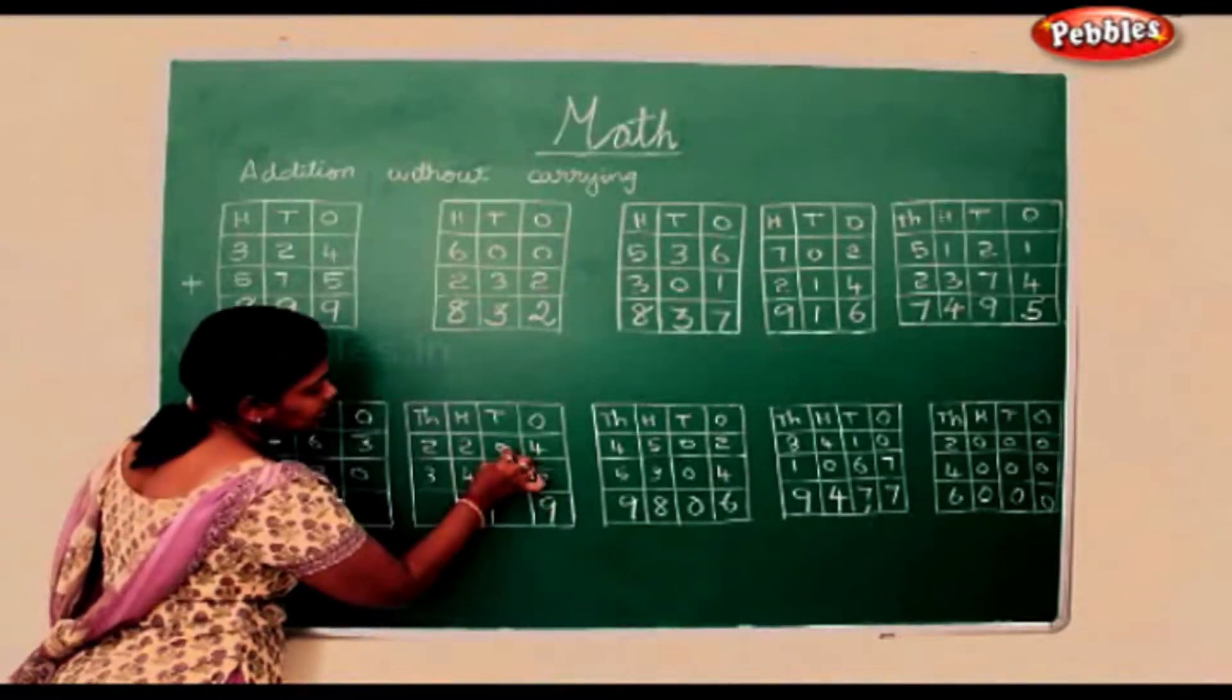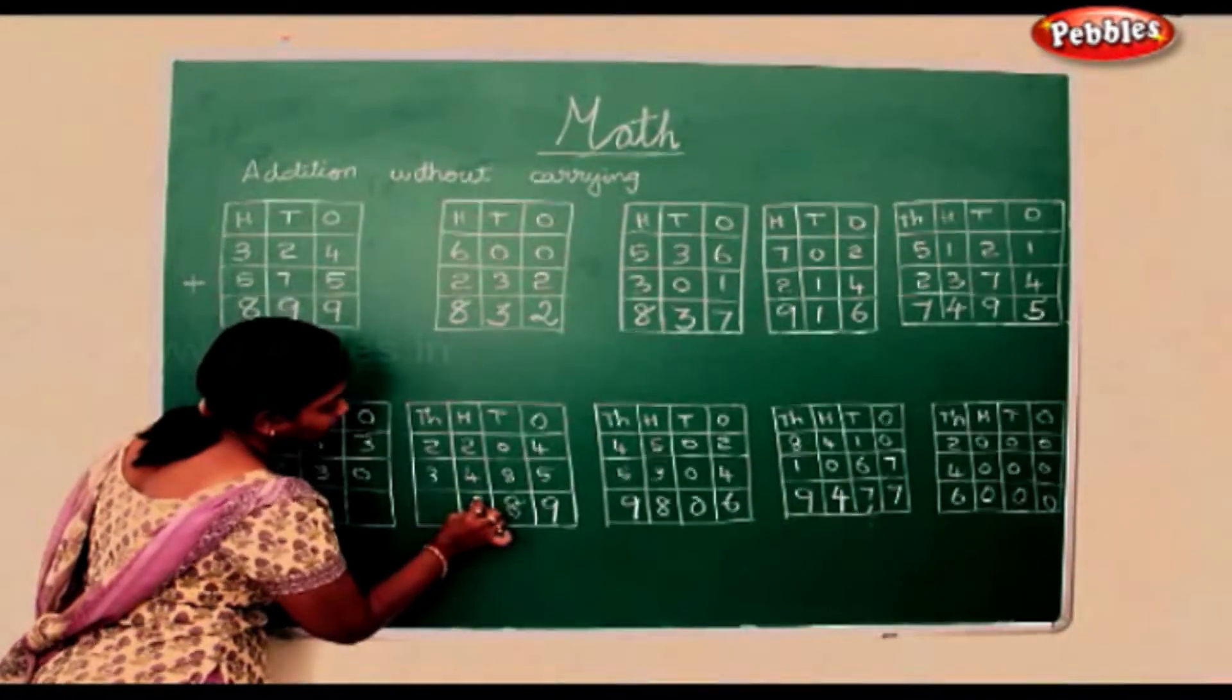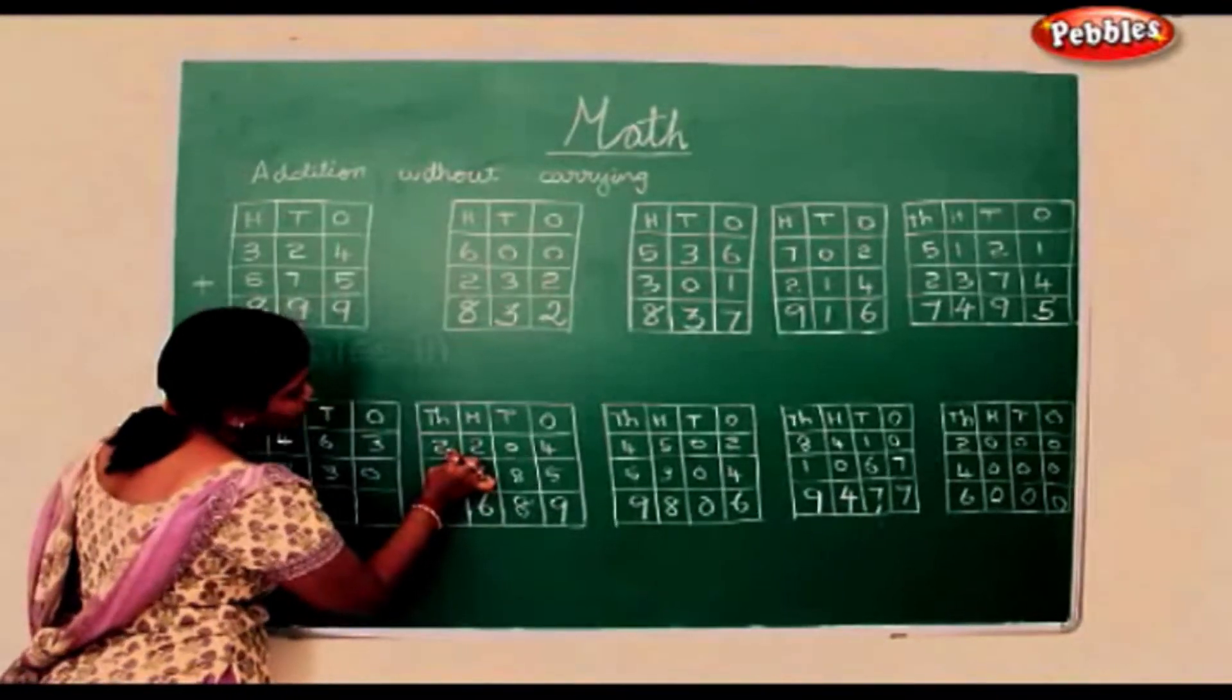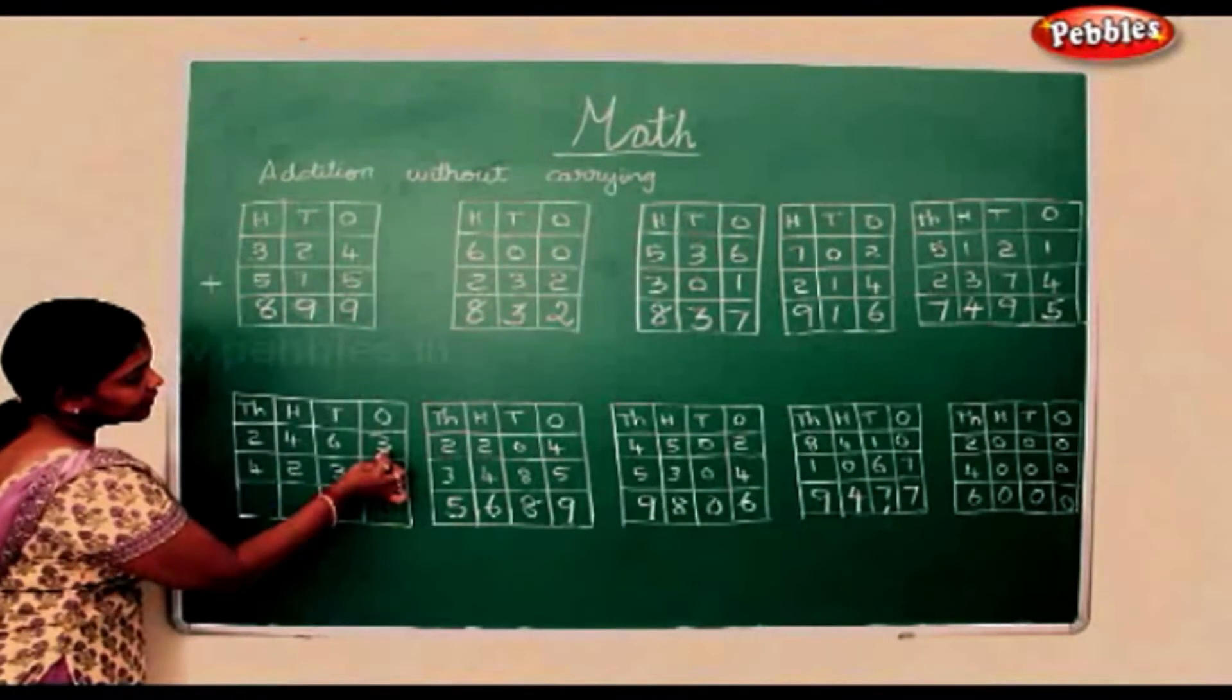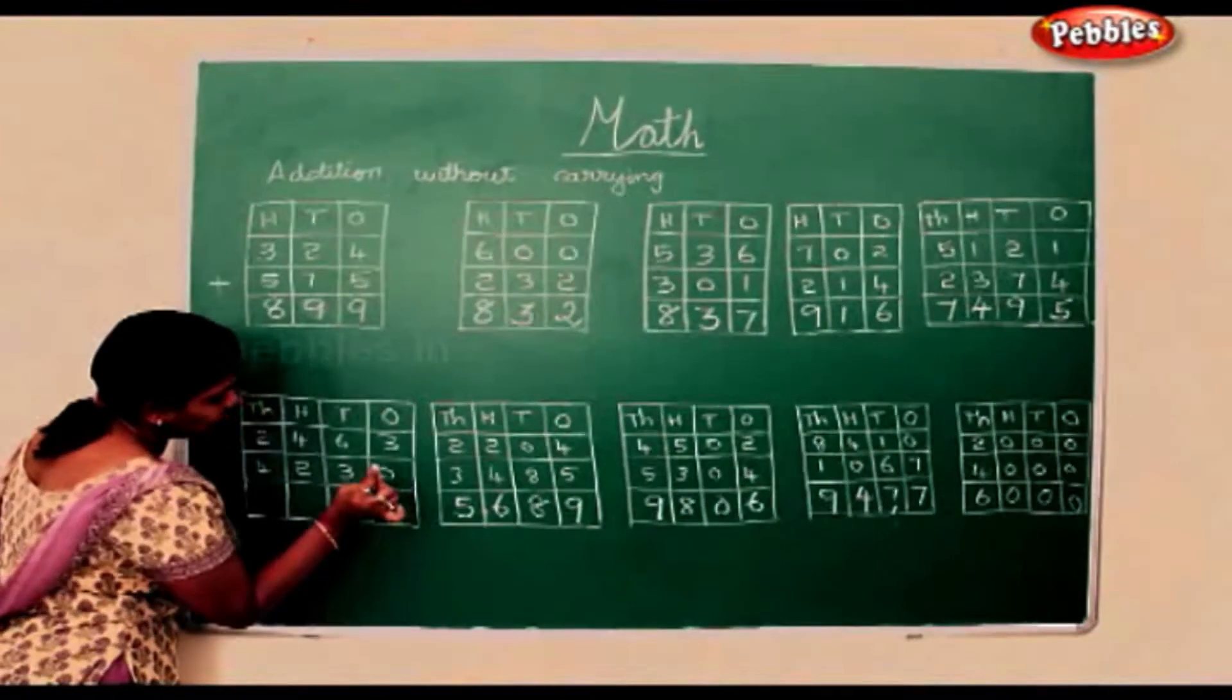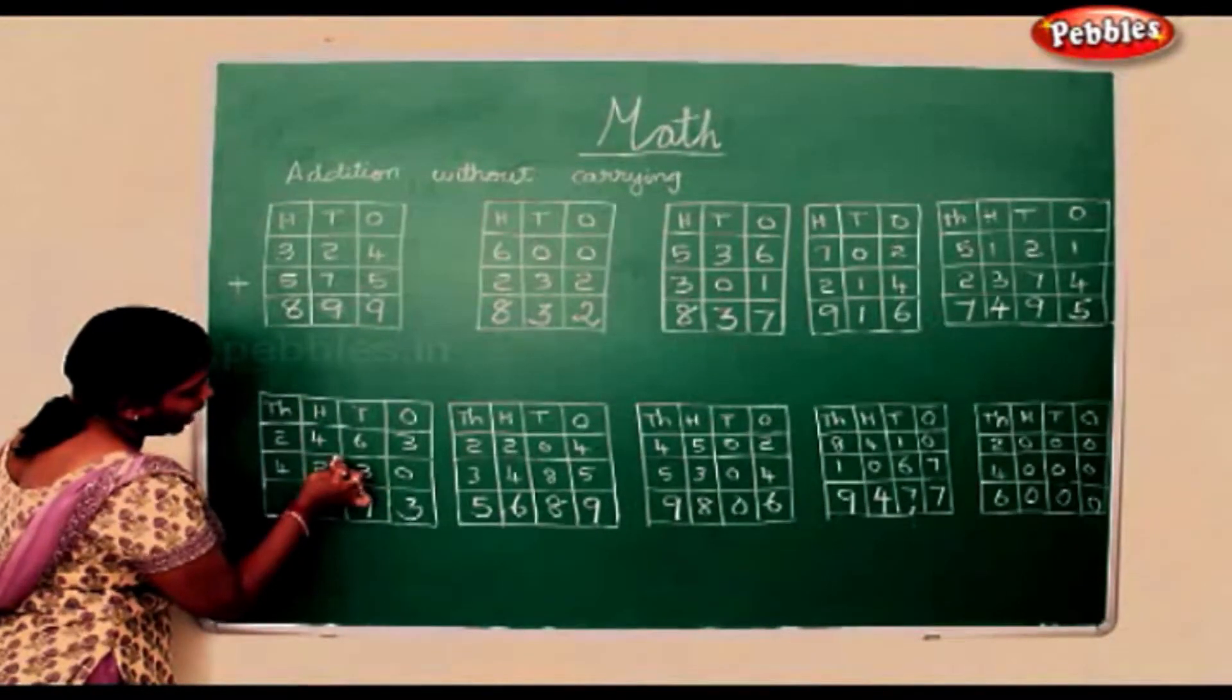0 add 8 is the number itself, 8. 2 add 4 is 6, 2 add 3 is 5, 3 add 0 is the number itself, 3. 6 add 3 is 9, 4 add 2 is 6.